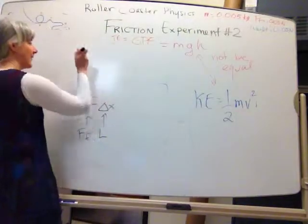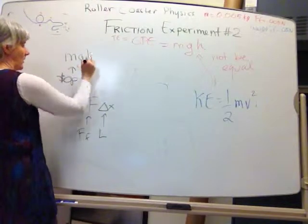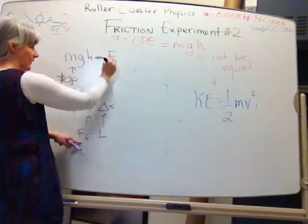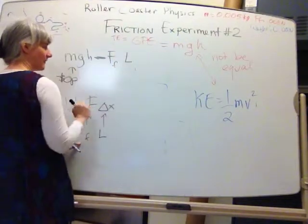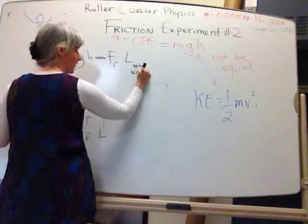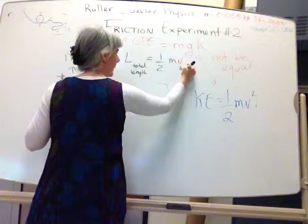And to do that, I'm going to say my original mgh at the top is going to equal the force of friction, no, sorry, minus the force of friction times the length of the track, total length, the whole track, is going to equal your actual kinetic energy at the bottom.